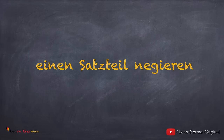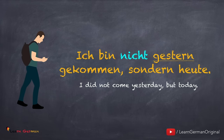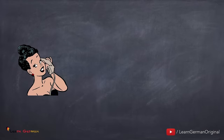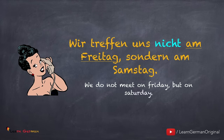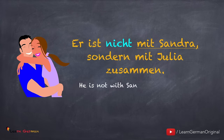Now you will learn how to negate a part of a sentence. Ich bin nicht gestern gekommen, sondern heute. Wir treffen uns nicht am Freitag, sondern am Samstag. Nicht ich, sondern er ist krank. Er ist nicht mit Sandra, sondern mit Julia zusammen. Die Satzteile, die unterstrichen waren, wurden negiert und auch betont.